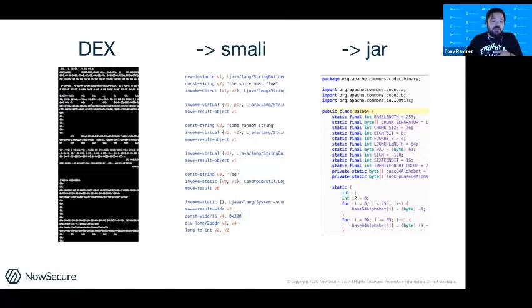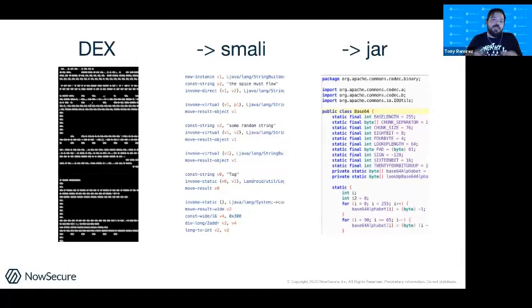Smali is the intermediary between Dex and JAR — you can go back to JAR, but you lose more information than if you stopped at Smali.